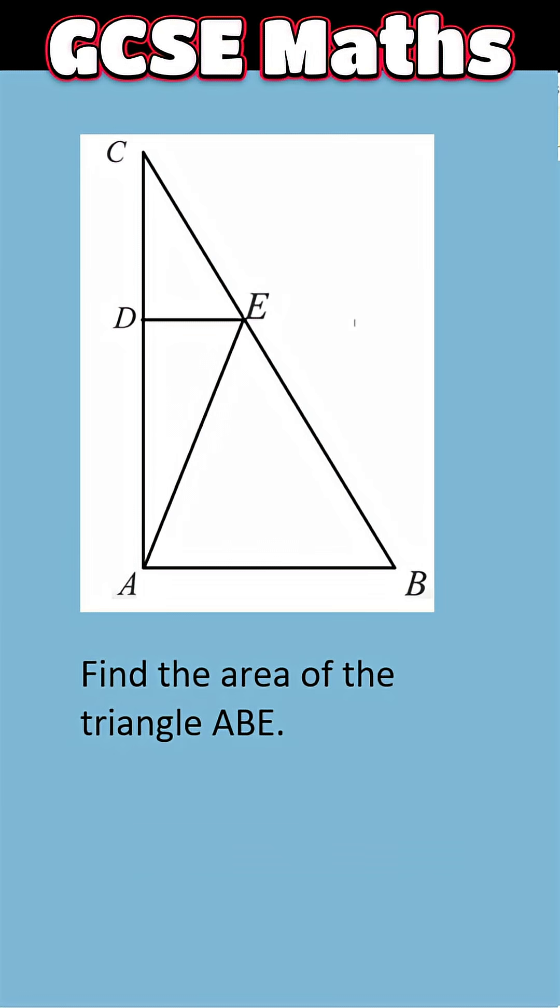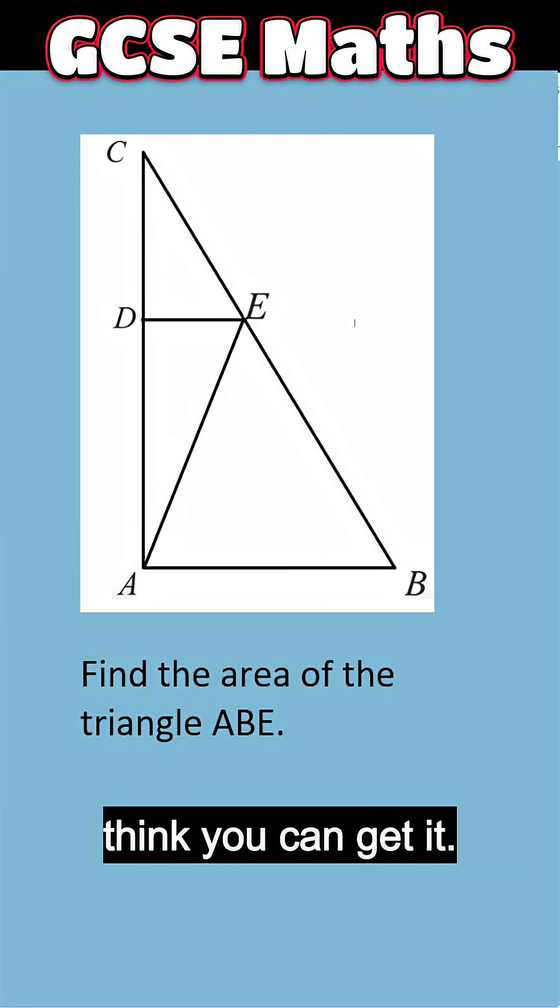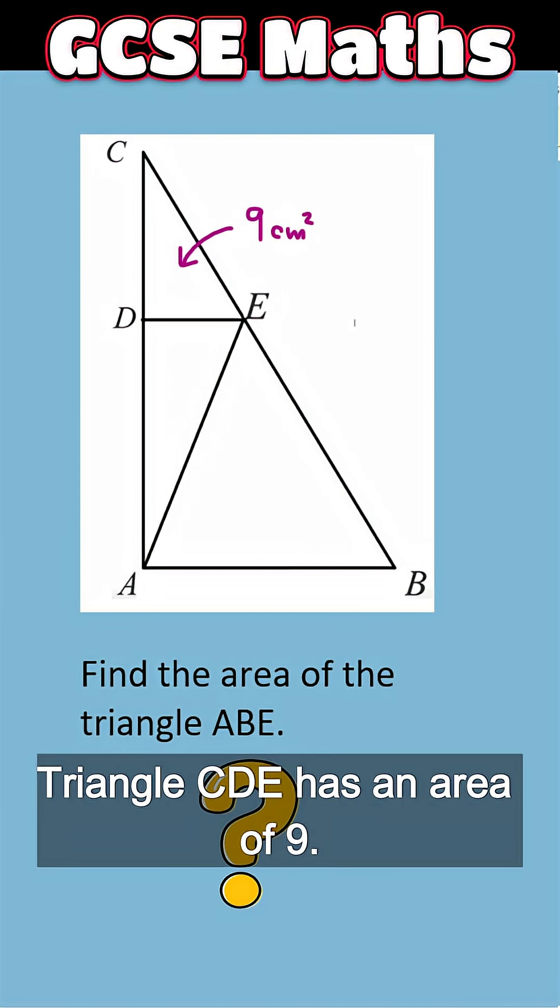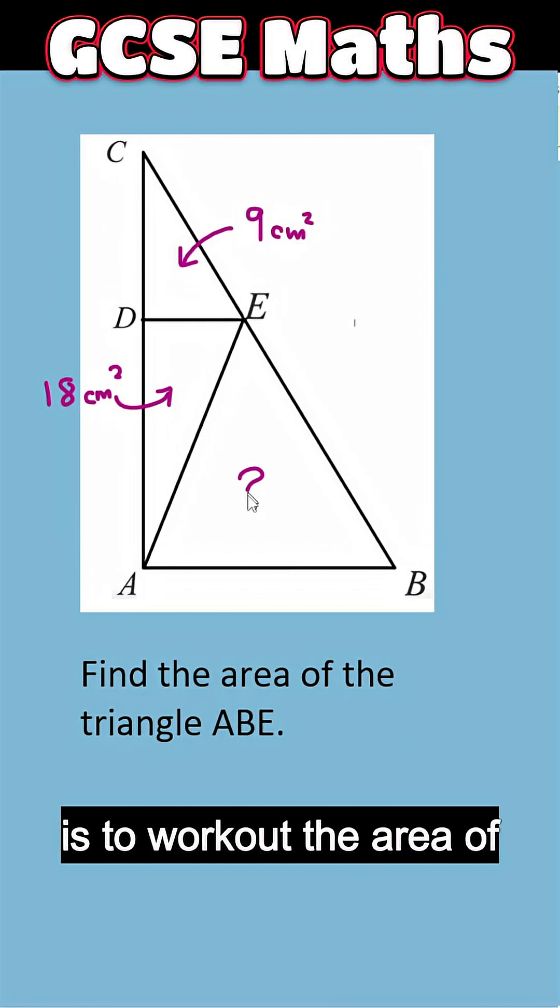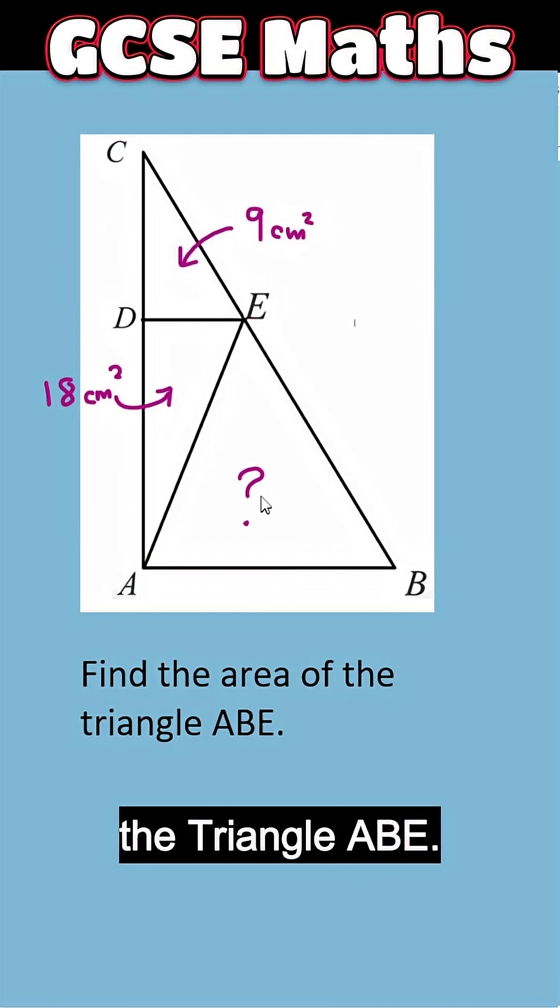Most GCSE students get this one wrong. Think you can get it? Triangle CDE has an area of 9. Triangle ADE has an area of 18. So your question is to work out the area of the triangle ABE.